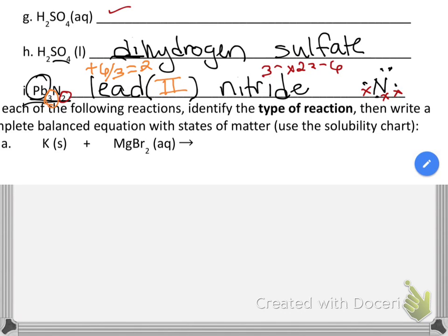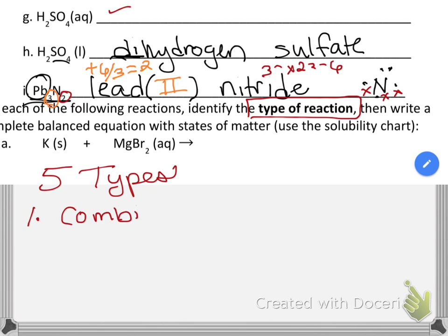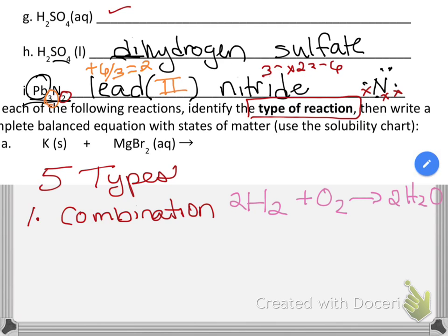For this next part, I have to identify the type of reaction. I remember from lab that there were five types, so I just want to remind myself of what they are. The first one is called a combination reaction — that literally sounds exactly like what it is. I can take two different elements and combine them together, and when I do, they create only one product.